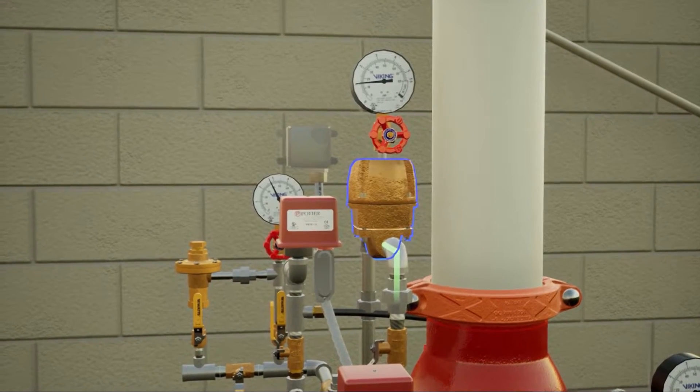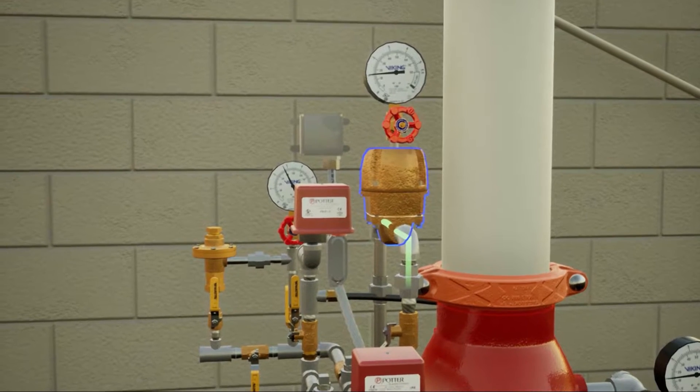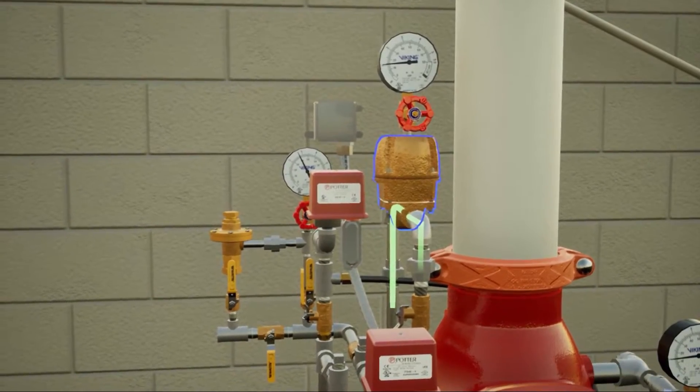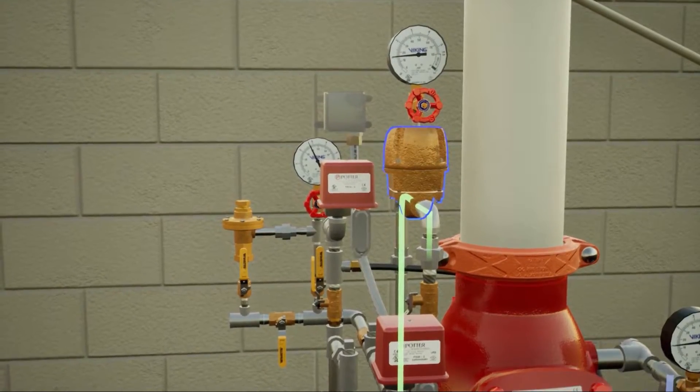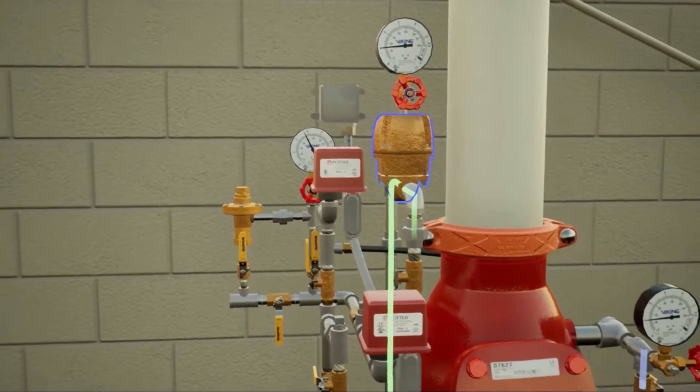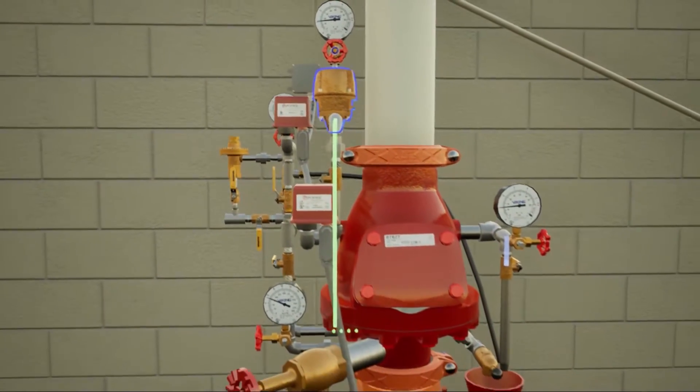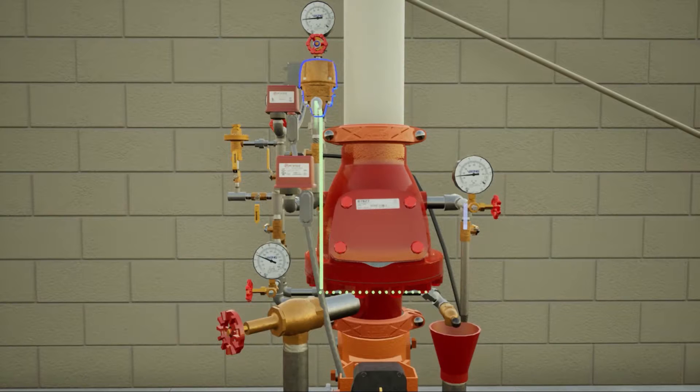If the system is equipped with an accelerator, a sudden drop of air pressure will cause the accelerator to activate, directing air pressure from the system side or outlet side of the dry pipe valve to the intermediate chamber of the dry pipe valve.